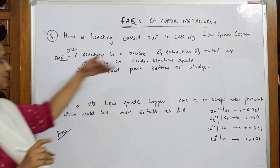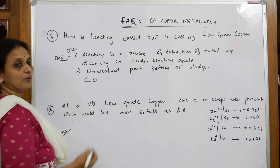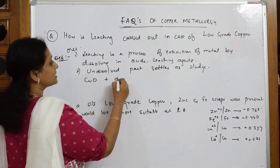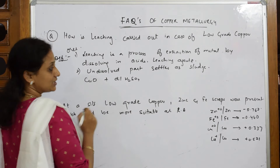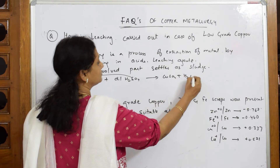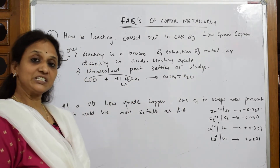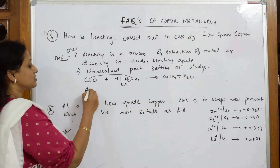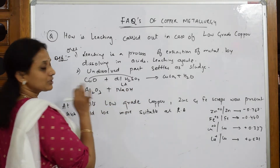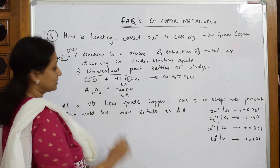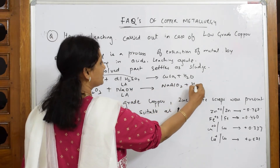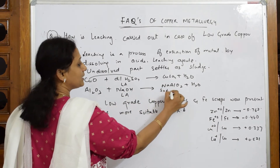Let us write one equation so that you will understand. For leaching of copper, the leaching agent used is dilute sulphuric acid. Copper reacts with dilute H₂SO₄ to form copper sulphate and water. As seen in aluminium extraction, the ore is Al₂O₃ and the leaching agent used is sodium hydroxide. It is specific to the particular metal. This forms a complex NaAlO₂, that is sodium meta-aluminate.